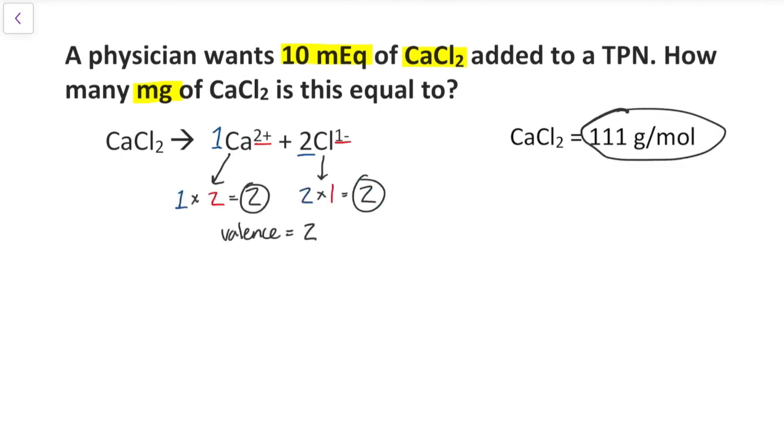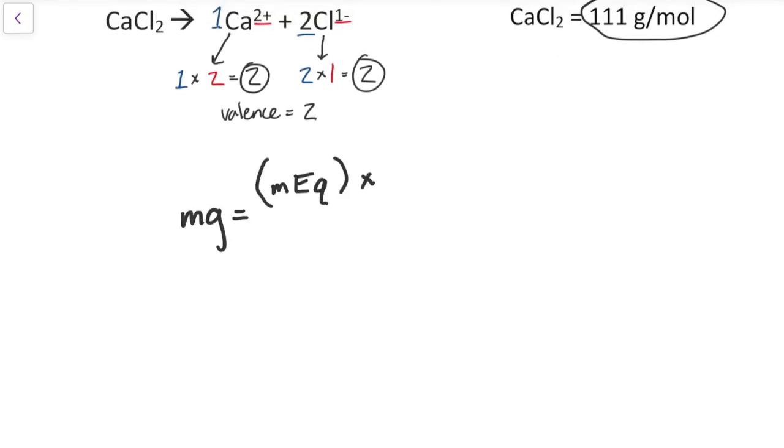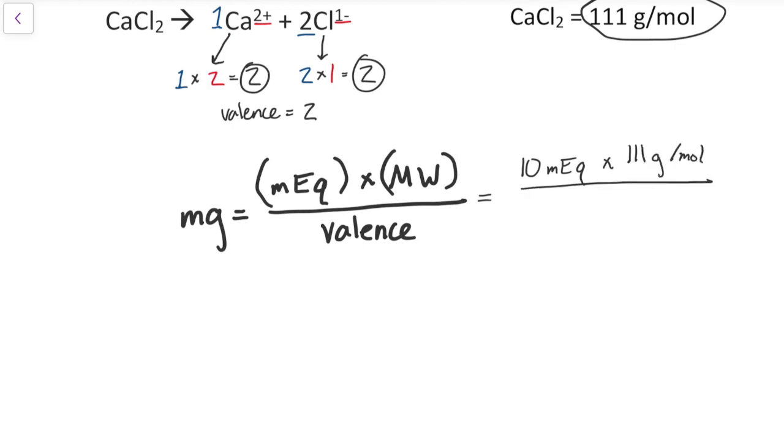Since we are given the milliequivalence and we are solving for milligrams, we're going to use the second equation. If you plug the numbers and solve for the milligrams, you should get 555 milligrams of calcium chloride.